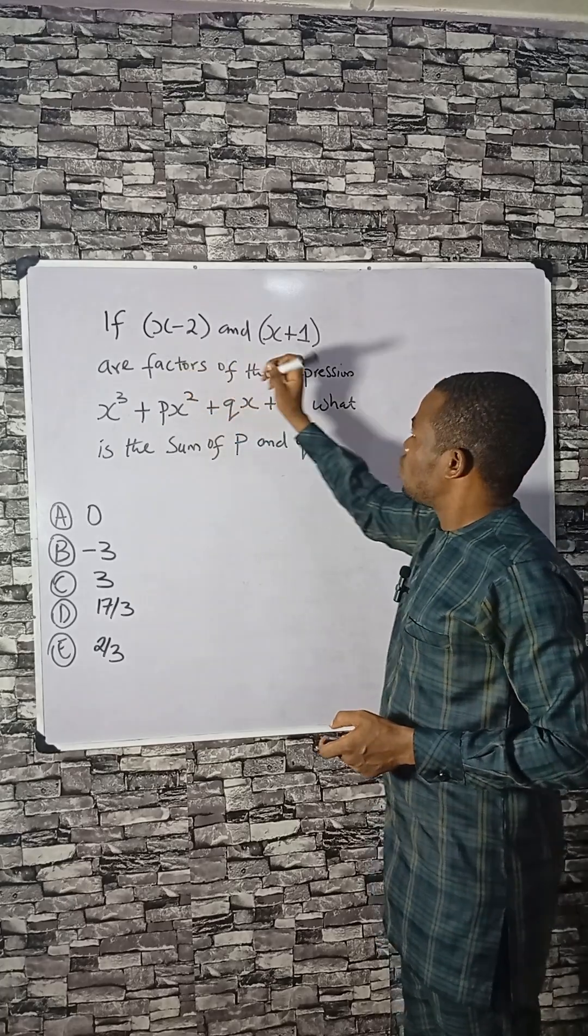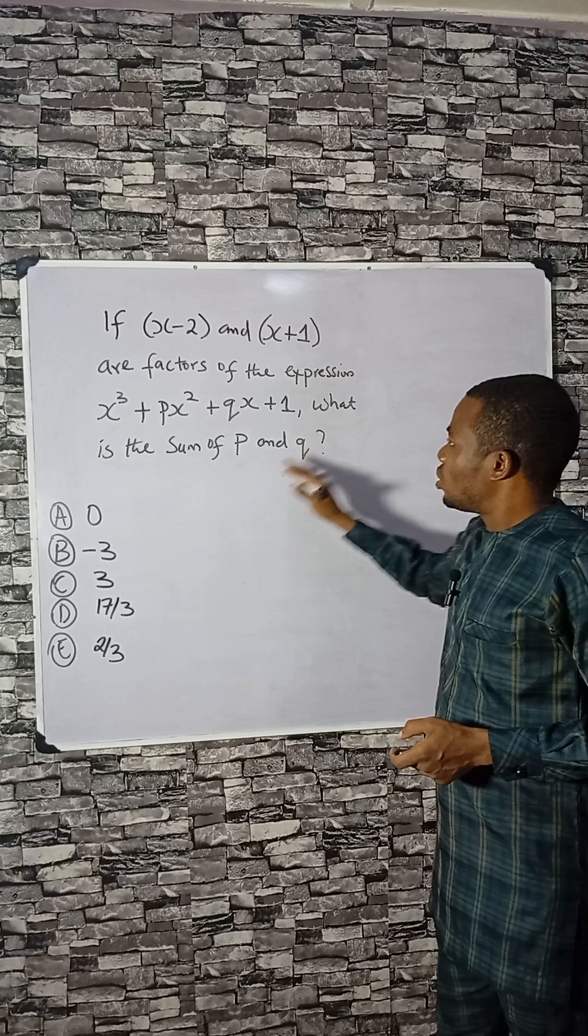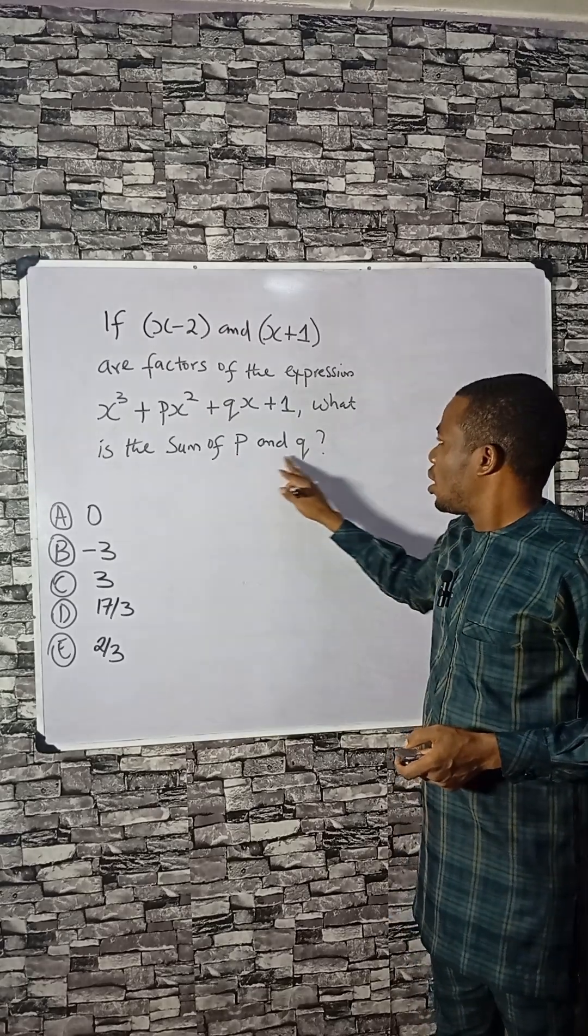If x minus 2 and x plus 1 are the factors of this polynomial, what is the sum of p and q?